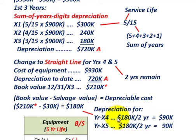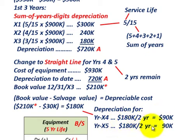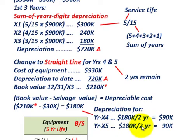With straight-line depreciation over the two remaining years, we divide the $180,000 depreciable cost by two years, giving us $90,000 per year. So for year X4, depreciation is $90,000, and for year X5, depreciation is also $90,000 — simply the remaining depreciable cost divided evenly over the two remaining years.